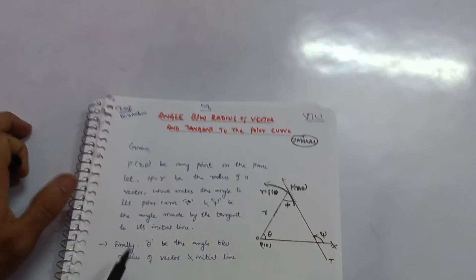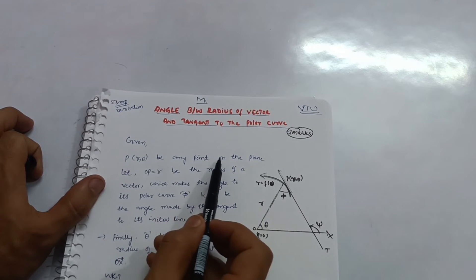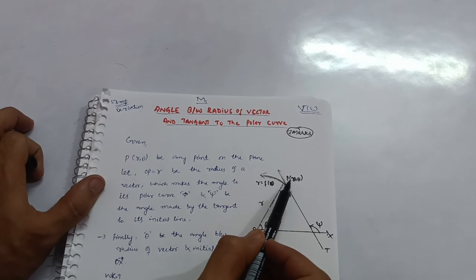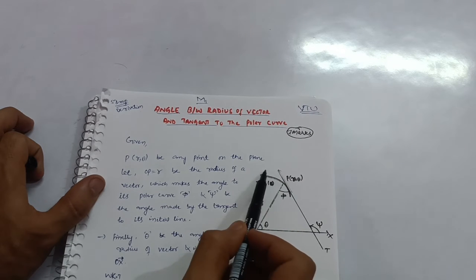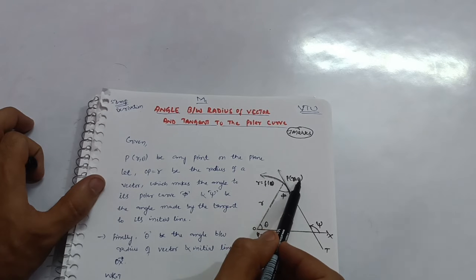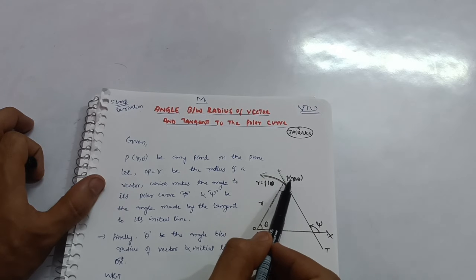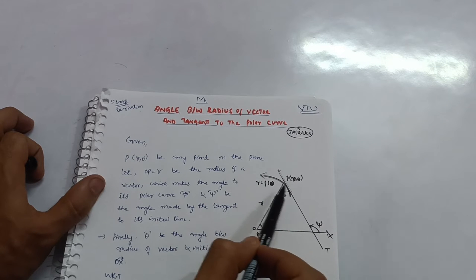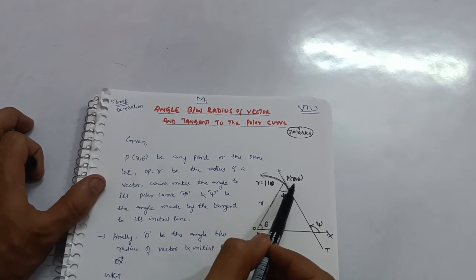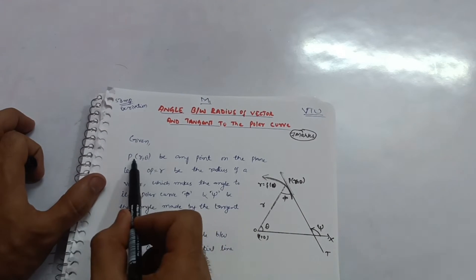Let P be any point on the plane with coordinates (r, θ). These are called polar coordinates. Whenever you use (x, y), those are called Cartesian coordinates. Here we are dealing with polar coordinates.